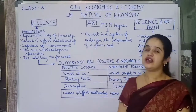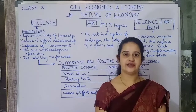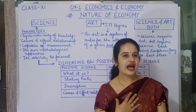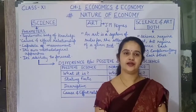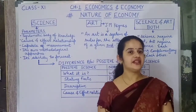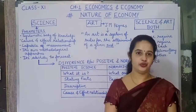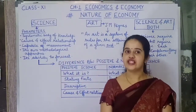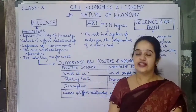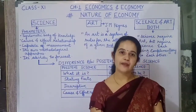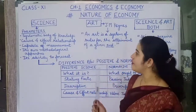Is economics a science? How would we know? Since we are commerce students, I will share five parameters with you. If any subject satisfies or fulfills these five parameters, then that subject can be called a science. Starting with the first parameter: systematic body of knowledge.